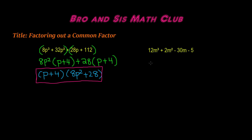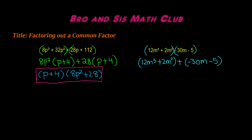Now let's do the second example, which is 12m cubed plus 2m squared minus 30m minus 5. We're going to put parentheses around 12m cubed and positive 2m squared, and put parentheses around negative 30m and negative 5. We need to have a sign in the middle, because if we just keep it like this, it looks like we're multiplying the two binomials. But in reality we're subtracting, because we have that minus 30m. So let's write this as 12m cubed plus 2m squared, and then plus, and then negative 30m minus 5.